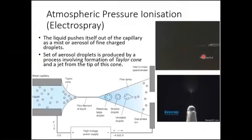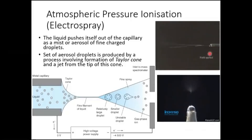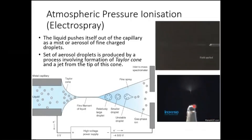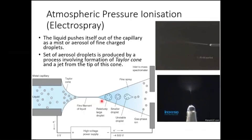In the animation, before field application there is no spray formation. The moment the field is applied, a cloud of ions appears. The Taylor cone is clearly visible in this region when no field is applied, and the moment the field is applied, a cloud of ionic gas forms in this area.